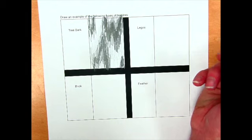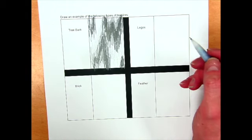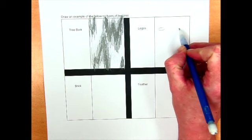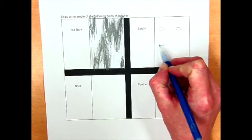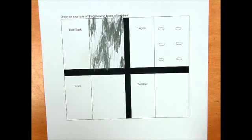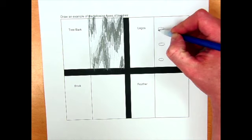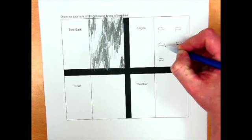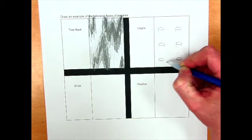There's my tree bark. All right, Legos. Legos, we know that they have circles on the top, but when I look at them from the side, they actually look like ovals. So I'm going to draw two ovals next to each other, and then three going down. Starting to kind of look like a Lego. Now, I want to make these look like they're standing up, so I'm going to give a little line on each side going straight down.